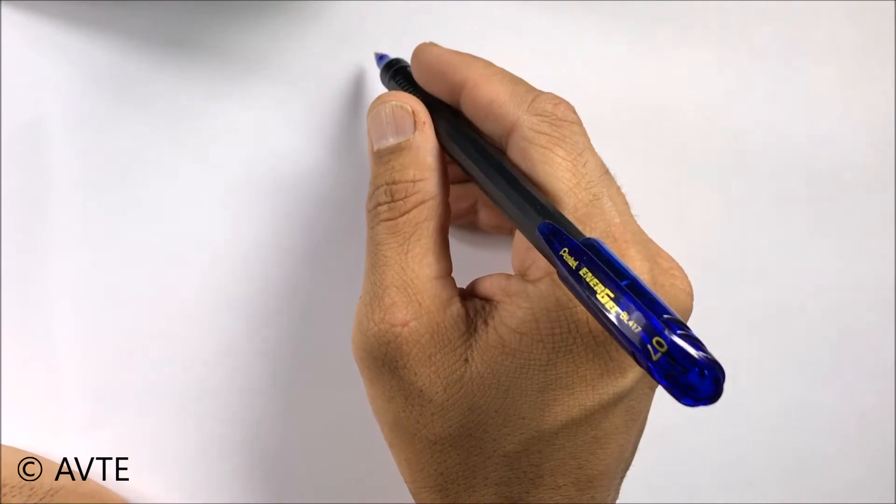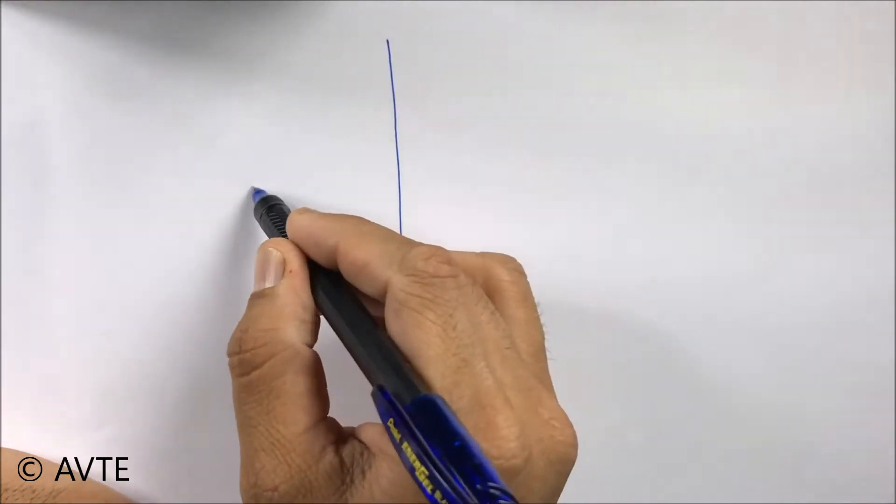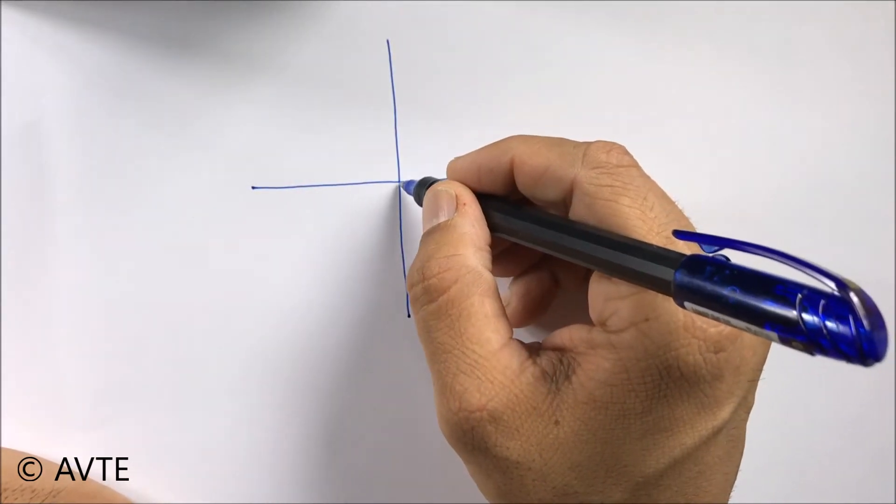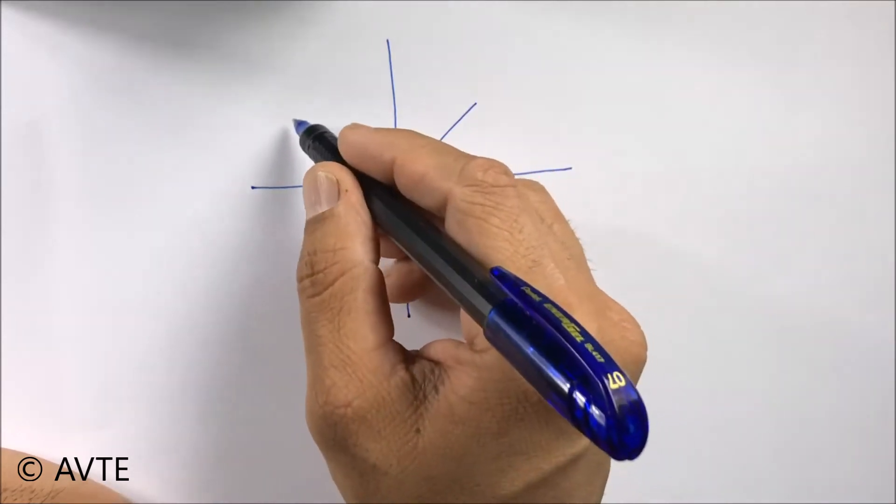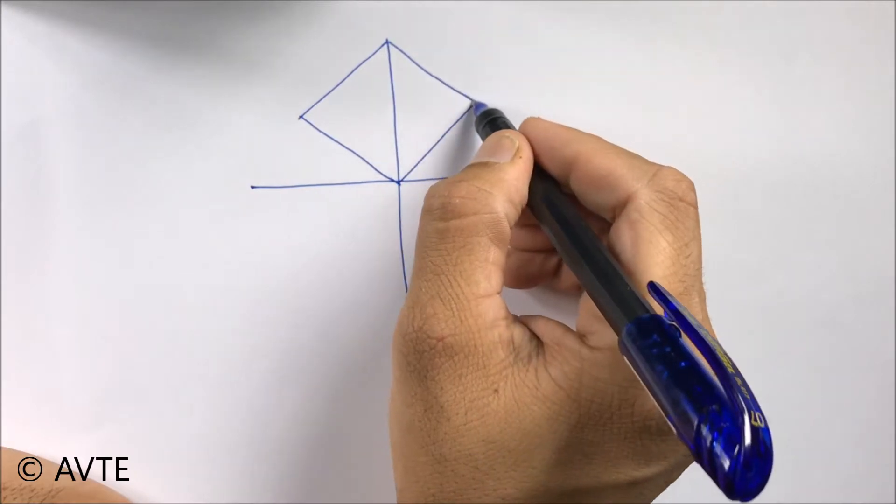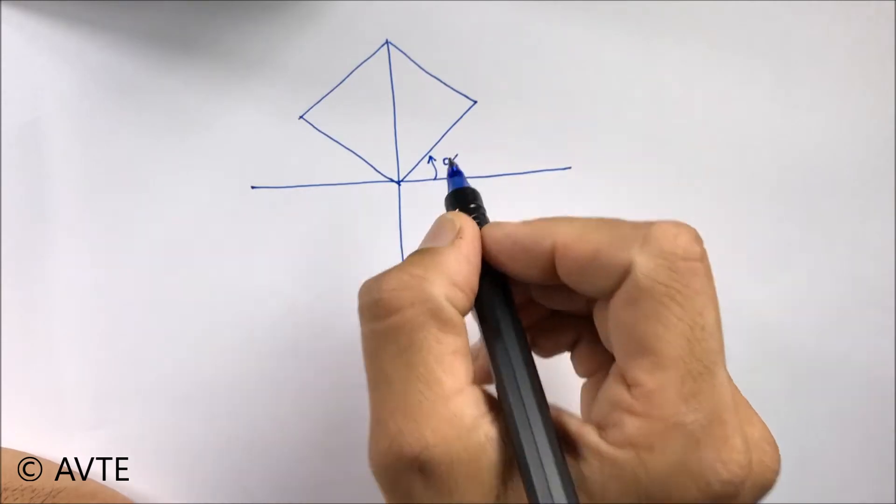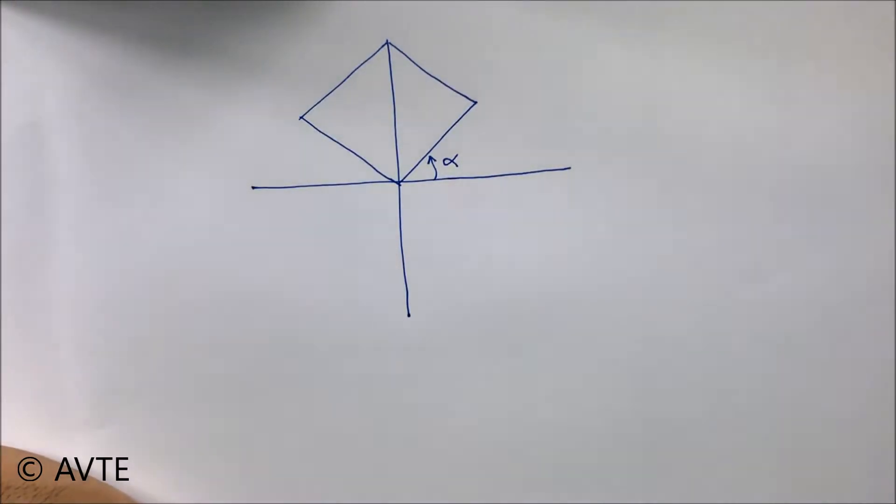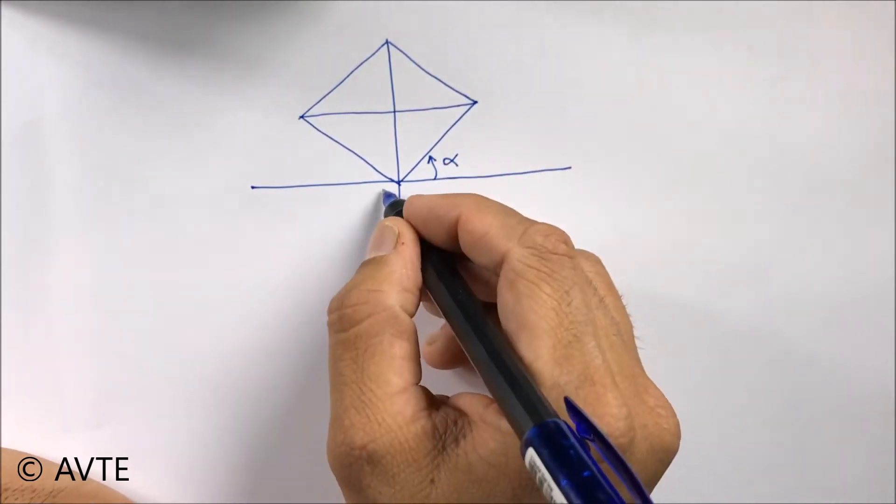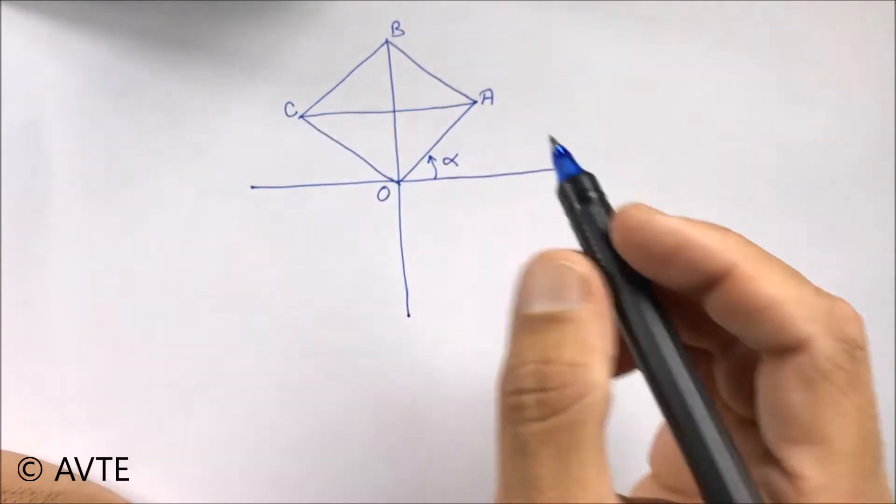Well this could be the diagram. This is the y-axis and this is the x-axis and the square is something like this. So we are assuming that the angle it is making with the x-axis is alpha and these are the two diagonals.